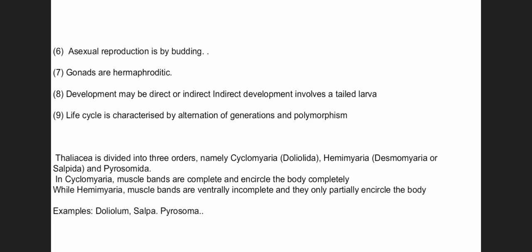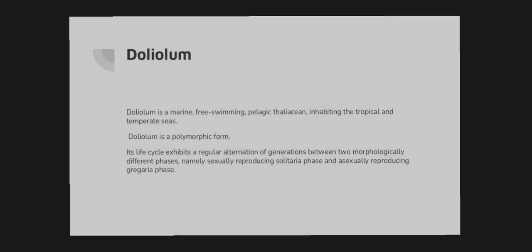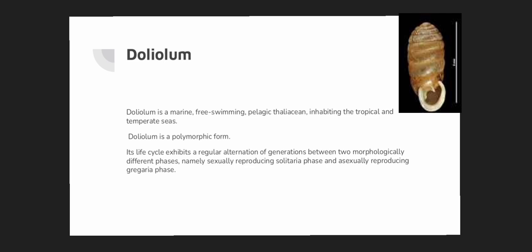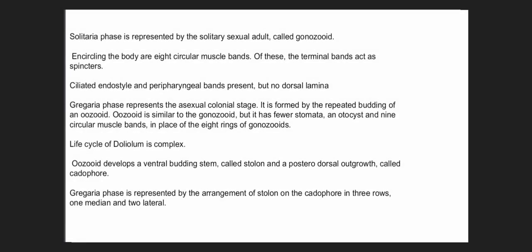We are going to discuss a brief account on Doliolum. Doliolum is a marine free-swimming pelagic thaliacean seen in tropical and temperate seas. It exhibits a polymorphic form. Its life cycle exhibits a regular alternation of generations between two morphologically different phases: a sexually reproducing solitary phase and an asexually reproducing gregaria phase. The solitary phase is represented by the solitary sexual adult called gonozoid.